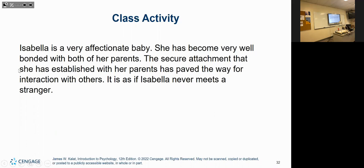Let's go through some examples. Isabella is a very affectionate baby who has become well bonded with both her parents. The secure attachment she has established has paved the way for interaction with others — it is as if Isabella never meets a stranger. That falls under infancy, trust versus mistrust. Secure attachment means she trusts people. A mistrusting child would be very anxious around strangers.